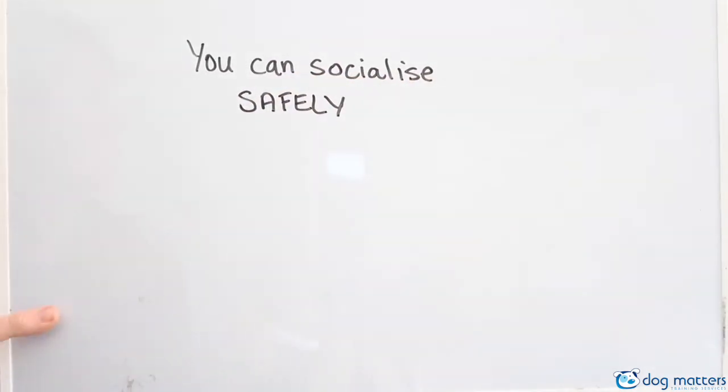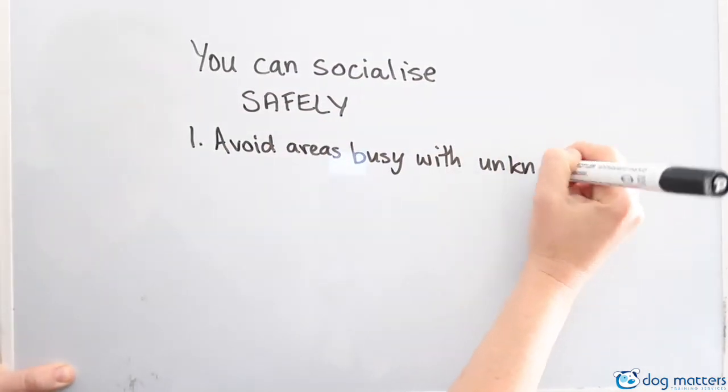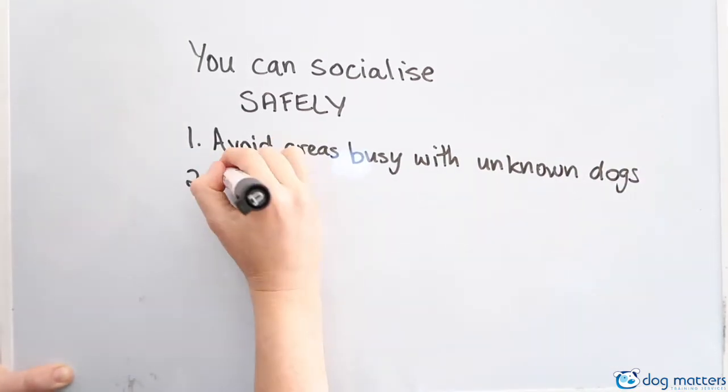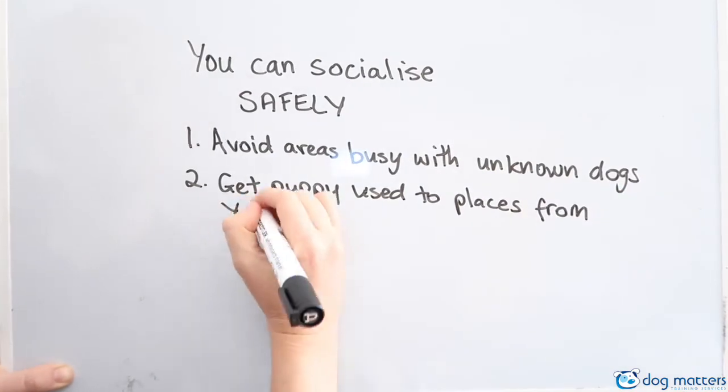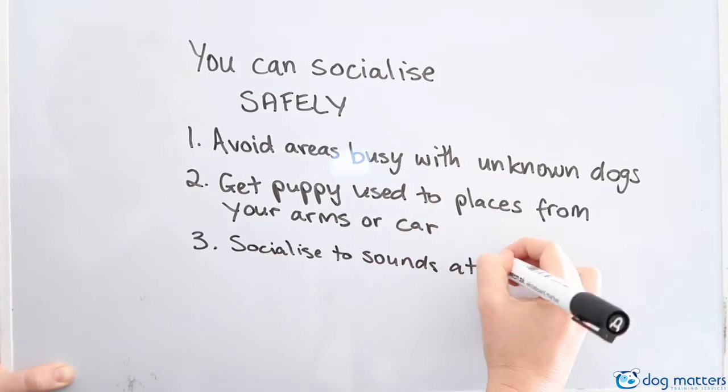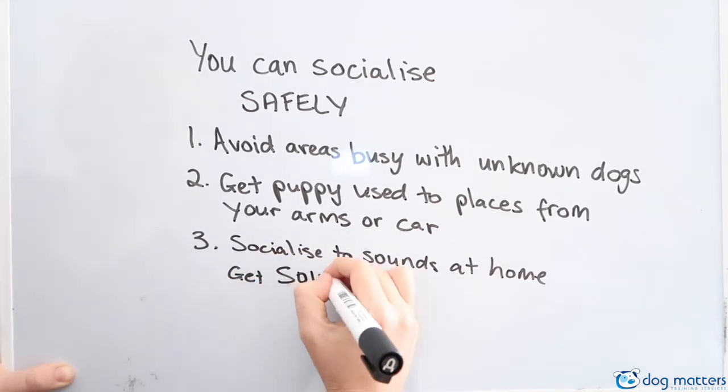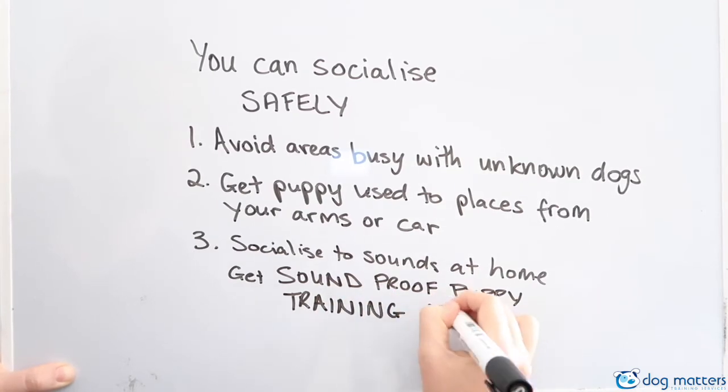You can socialize safely. Firstly, you can avoid areas that are busy with unknown dogs. Secondly, get your puppy used to places from your arms or from your car. Third, you can socialize to sounds at home. I recommend you get the Soundproof Puppy Training app for this.